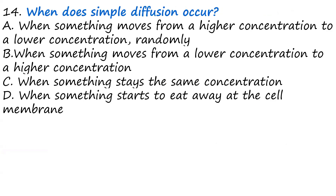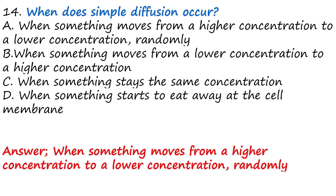Question fourteen: When does simple diffusion occur? A, when something moves from a higher concentration to a lower concentration randomly. B, when something moves from lower to higher concentration. C, when something starts to eat away at the cell membrane. Simple diffusion occurs when a substance moves from a region of higher concentration to a region of lower concentration. Please write in the comment section: what is the difference between simple diffusion and osmosis?